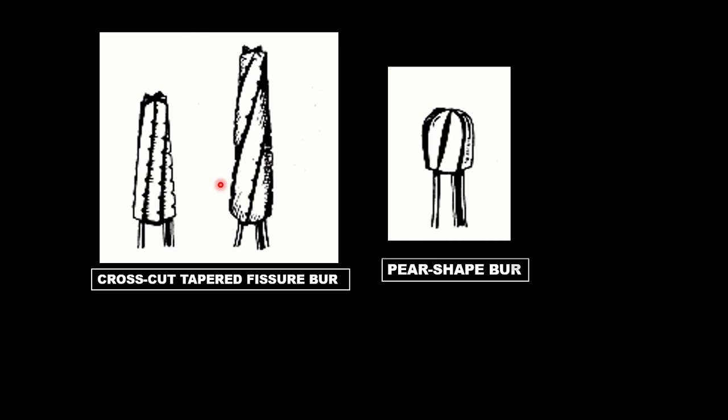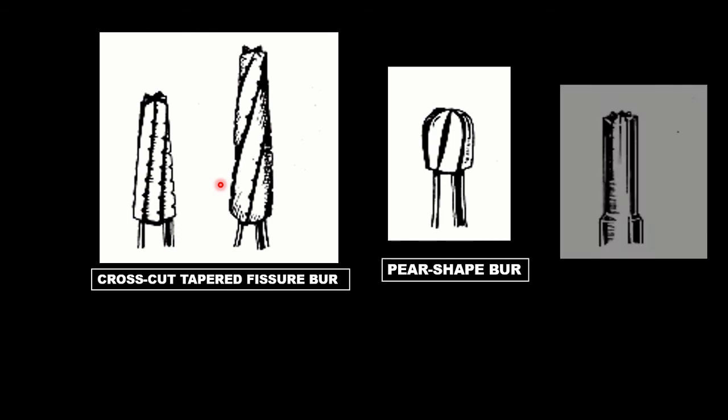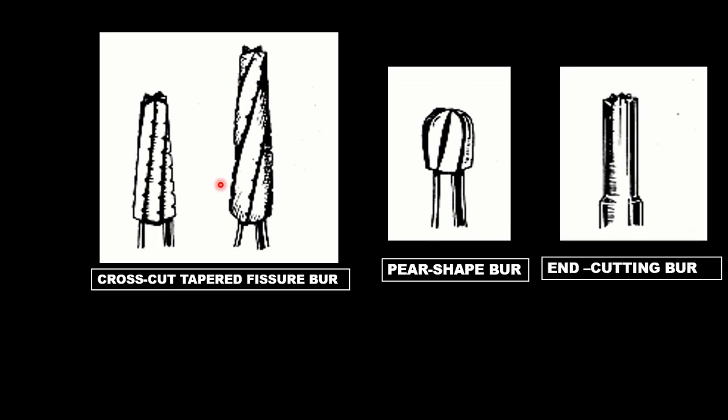And these are the cross-cut tapered fissure burs. Here we can see they have additional cuts in the blade for easier cutting and less debris build-up. Next is the pear shape, these are used in periodontics basically.